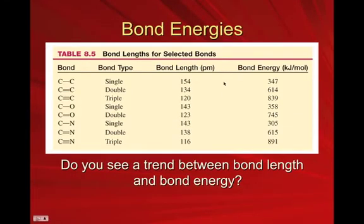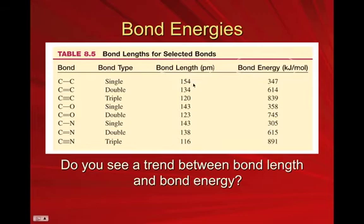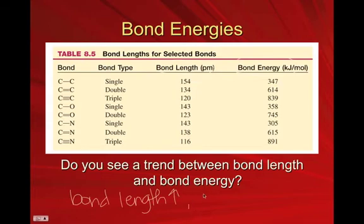Looking at this table — you don't have to write it down — do you see a trend between bond length and bond energy? The longest bond length, 154 pm, is one of the weakest. As the bond gets shorter, the energy goes up; even shorter, energy goes up even more. So as bond length increases, bond energy goes down, and vice versa: as bond length gets shorter, bond energy goes up.